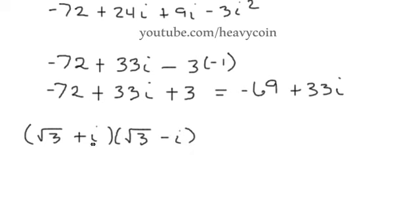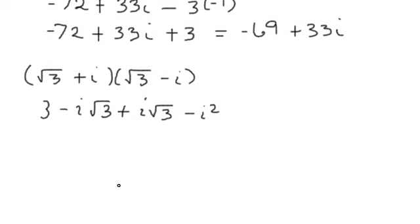So the square root of 3 times the square root of 3 is just 3. The square root of 3 times i is negative i square root of 3. We always put the radical on the right hand side of i. And then that's going to be minus i squared. And of course those are going to cancel out. We have 3 minus negative 1 squared. And that becomes 3.